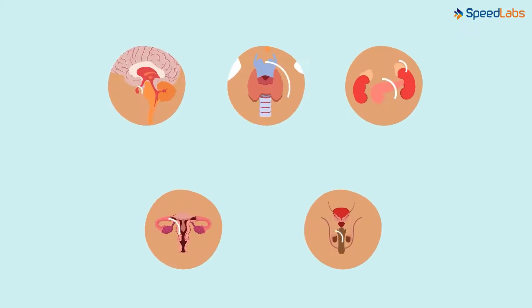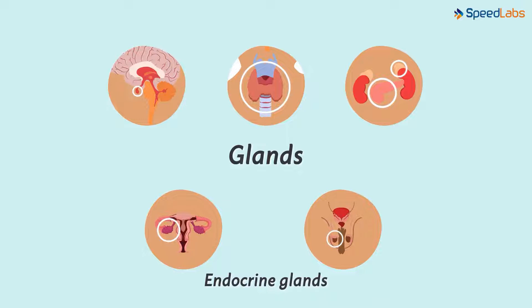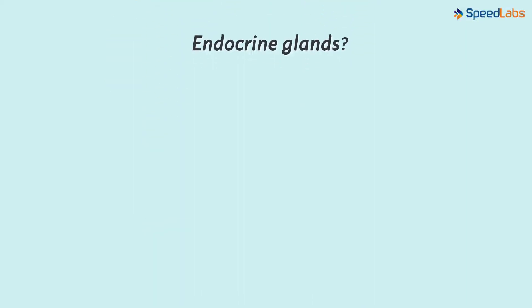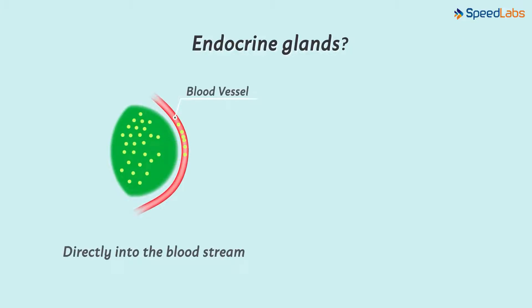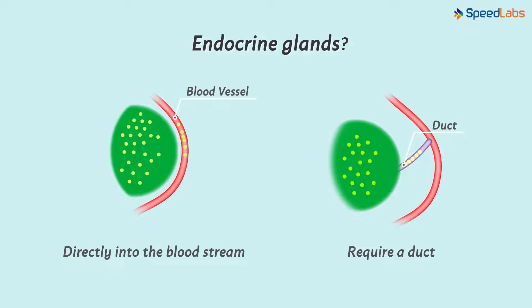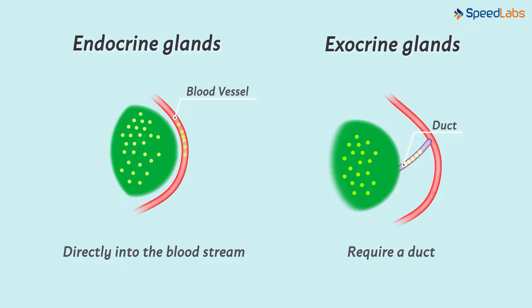Firstly, do we know what these organs producing various hormones are called? They are known as glands. Many of the glands in our body are endocrine glands, just like the testes and the ovaries. Glands produce chemicals which are meant to work at distant places in the body. The major classification of glands is carried out on the basis of the release of the chemicals secreted — whether the glands secrete the chemicals directly into the bloodstream or require a duct or channel to do so. This classifies them as endocrine and exocrine glands respectively. Endocrine means directly into the bloodstream, while exocrine ones require a duct.